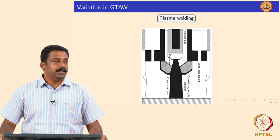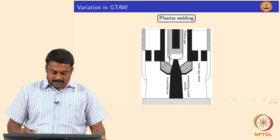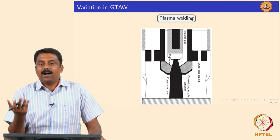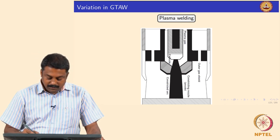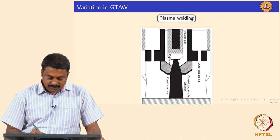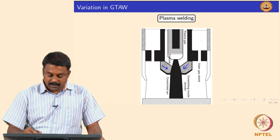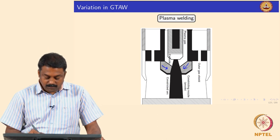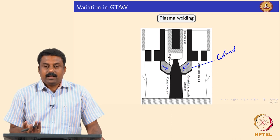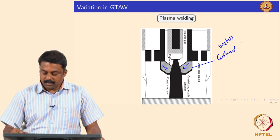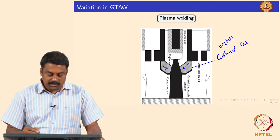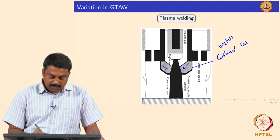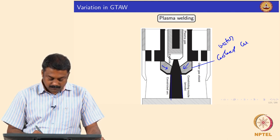In plasma welding we use two gases instead of one: one gas is the plasma gas, the other is the cooling gas or outer gas. We have a plasma gas which is used for striking the arc or plasma, and then we use another additional orifice that passes the constricting gas. Generally this nozzle is cooled — otherwise this nozzle will heat up significantly — so we use water cooled copper nozzles to send the outer constricting gas, which allows us to form the plasma jet.